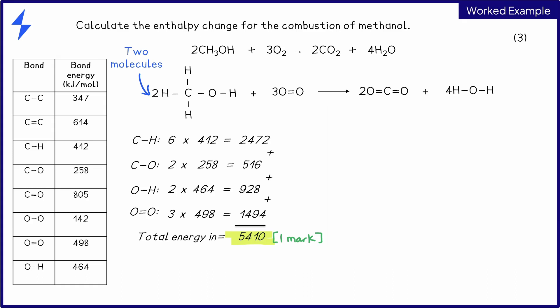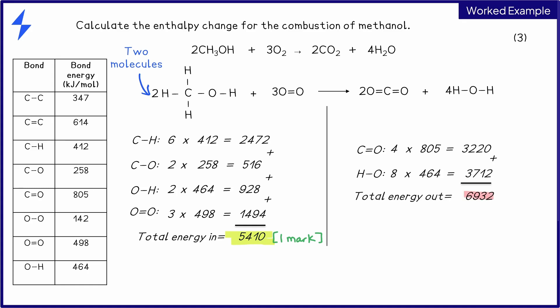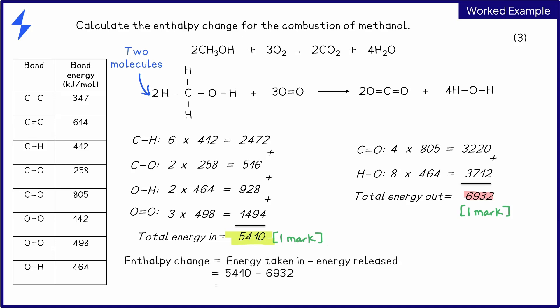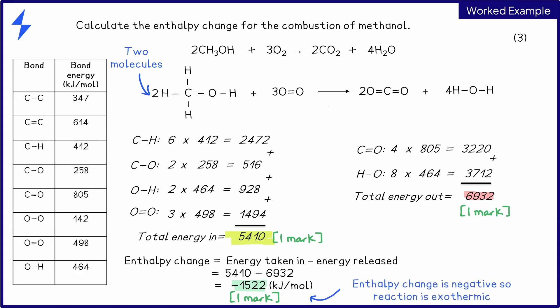Repeat this process for the product. Identify the types of bonds that you have and the number for each one, multiplying this by its bond energy and adding your totals together, to give you a total amount of energy that is released when these bonds are formed. This gives us a value of 6,932 kilojoules per mole, and will score your second mark. Take the energy out away from your energy in to achieve your total enthalpy change, which gives you a value of minus 1,522 kilojoules per mole, to score your final mark. Again, the answer is negative, so the reaction is exothermic.